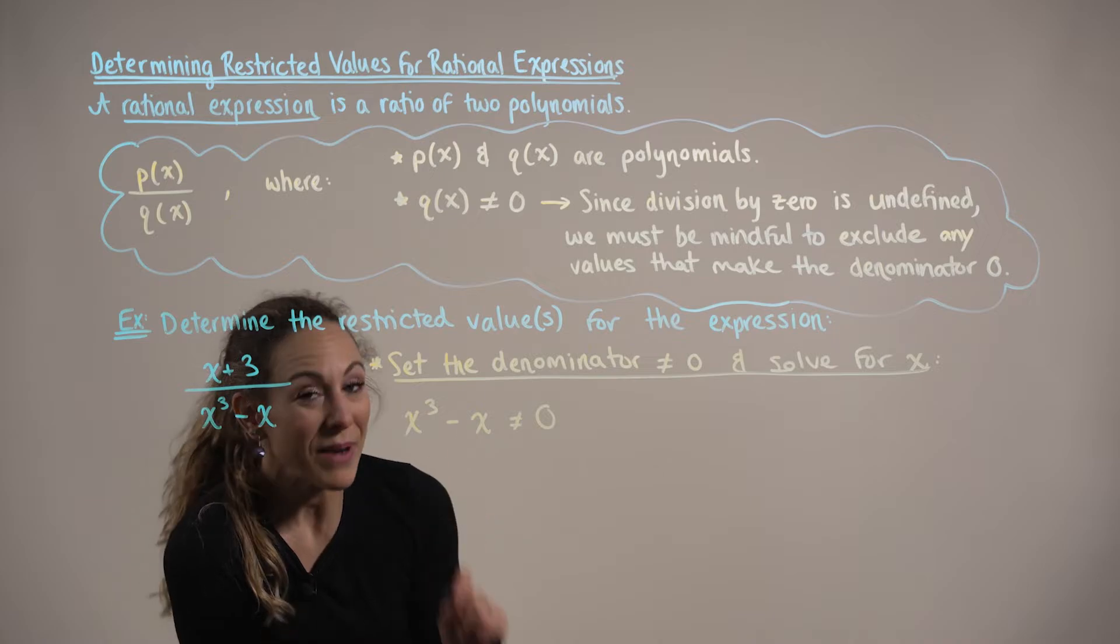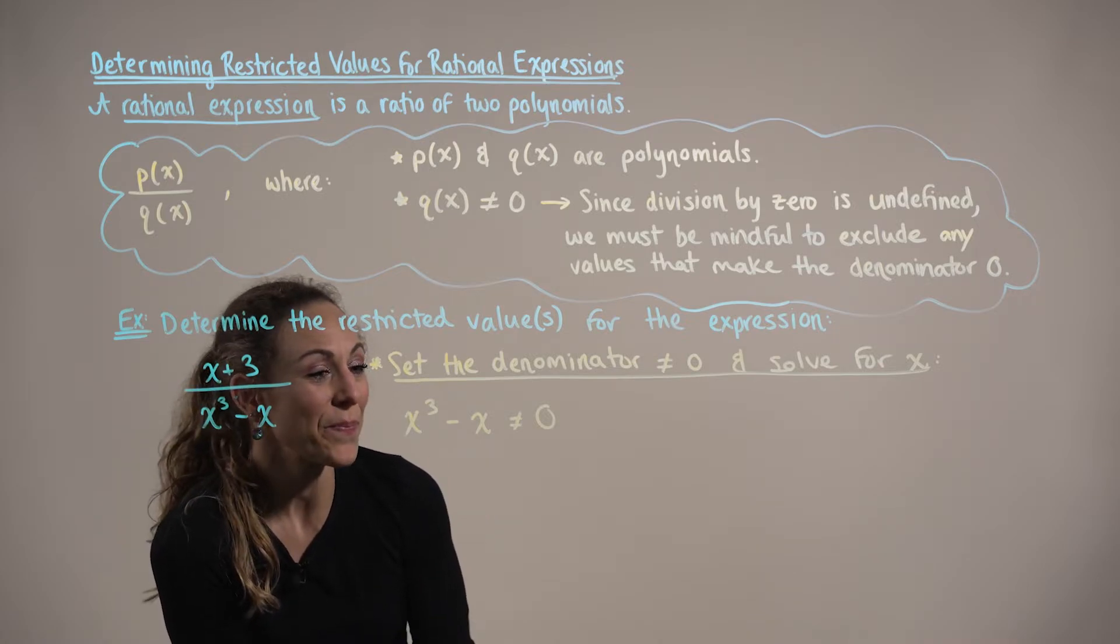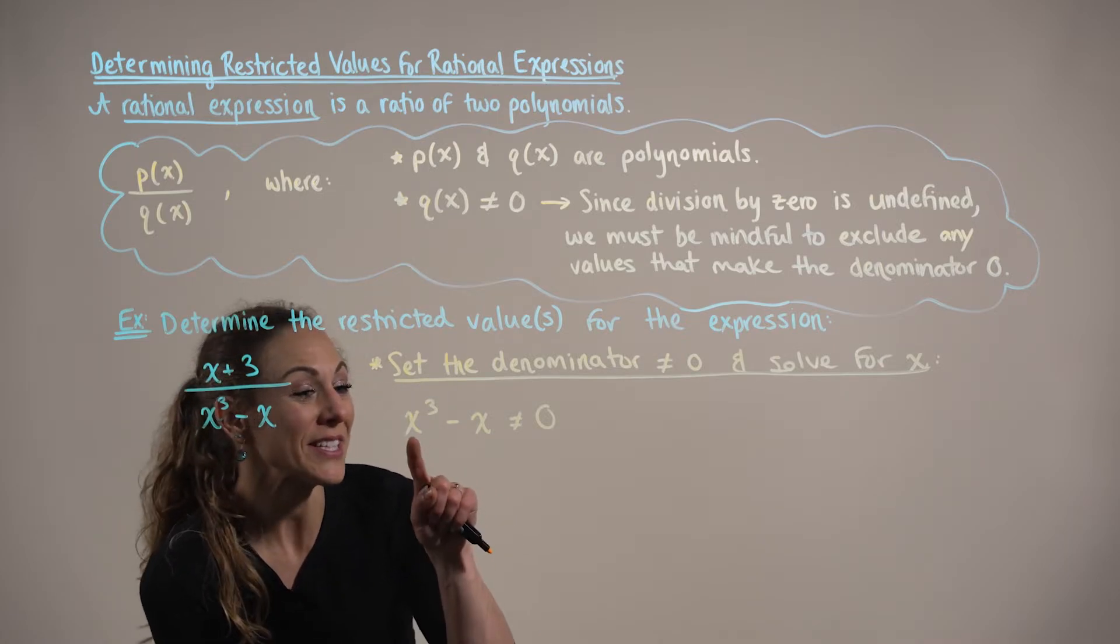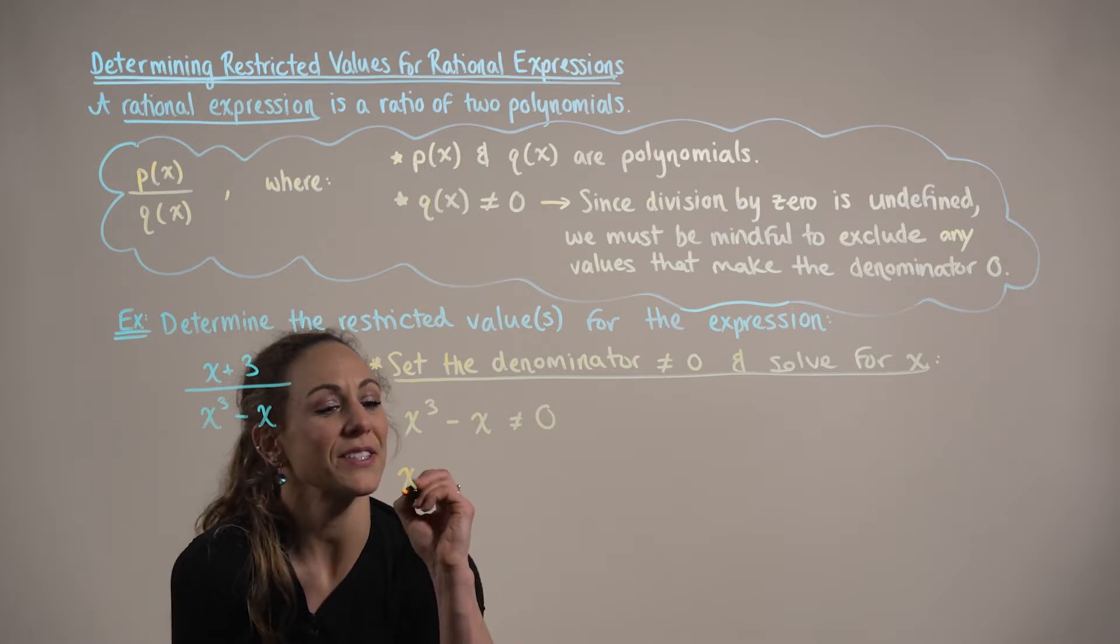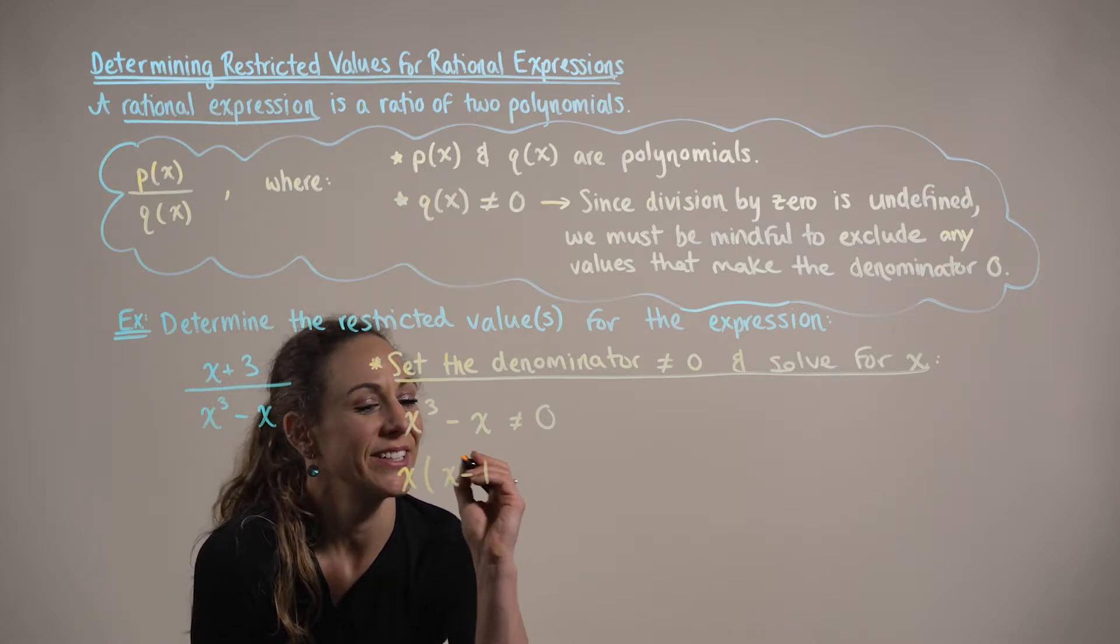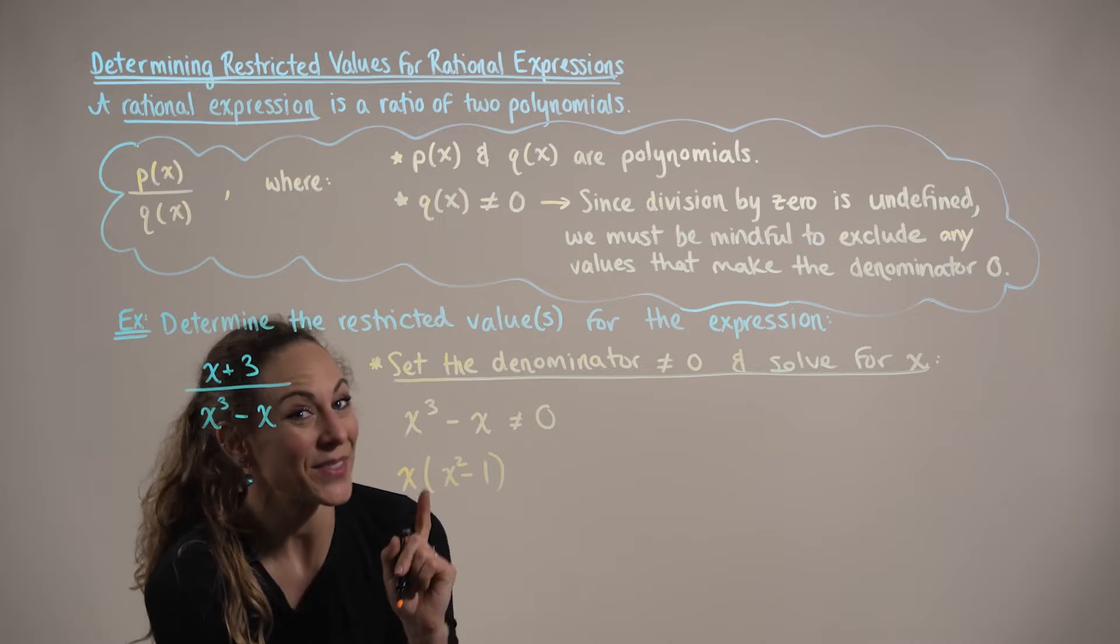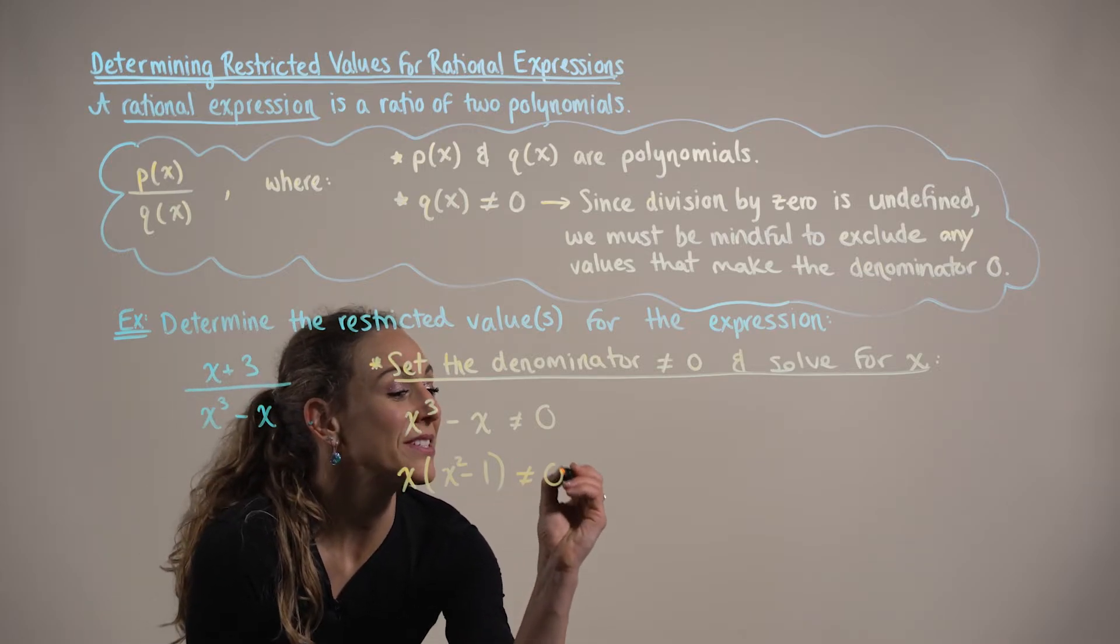Here we have x cubed minus x cannot be equal to 0. Looking for a greatest common factor, we can see that both terms have a greatest common factor of x, leaving us with x times x squared minus 1 cannot be equal to 0.